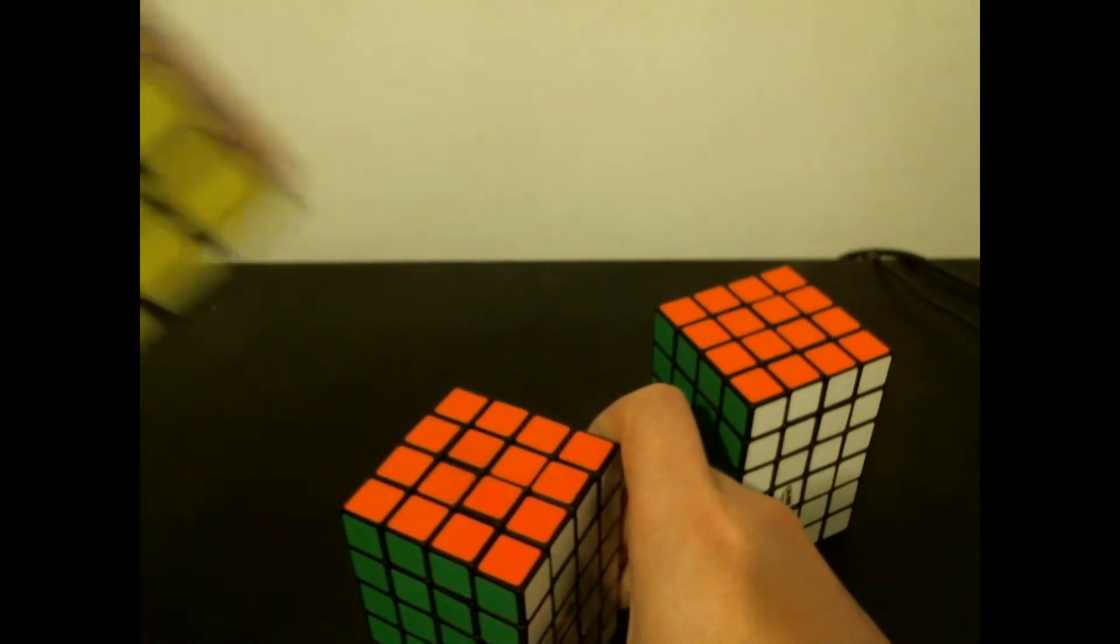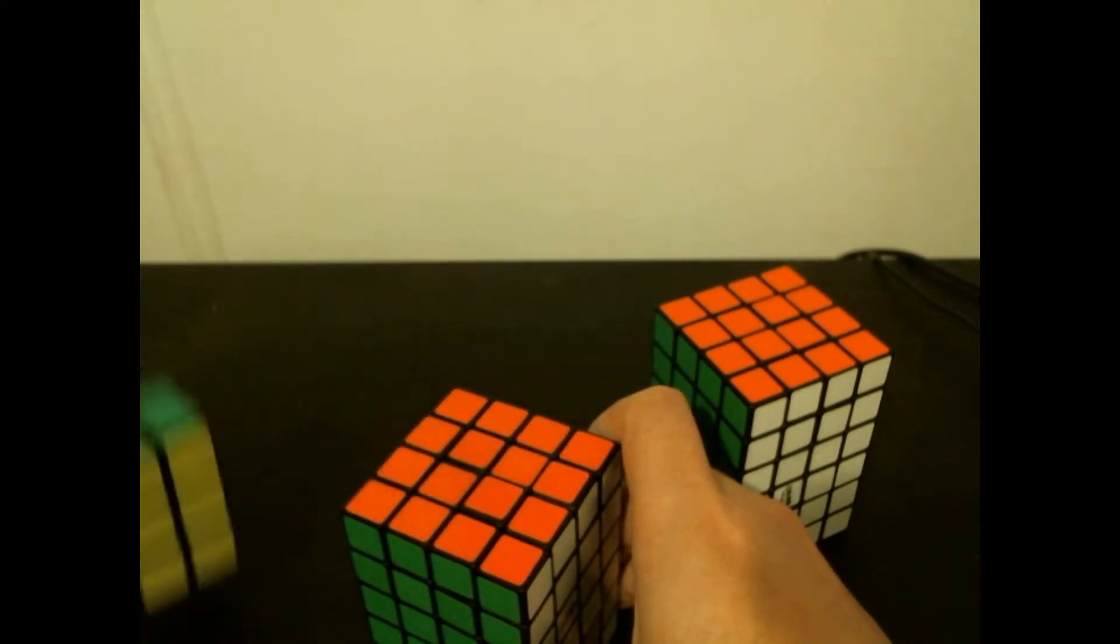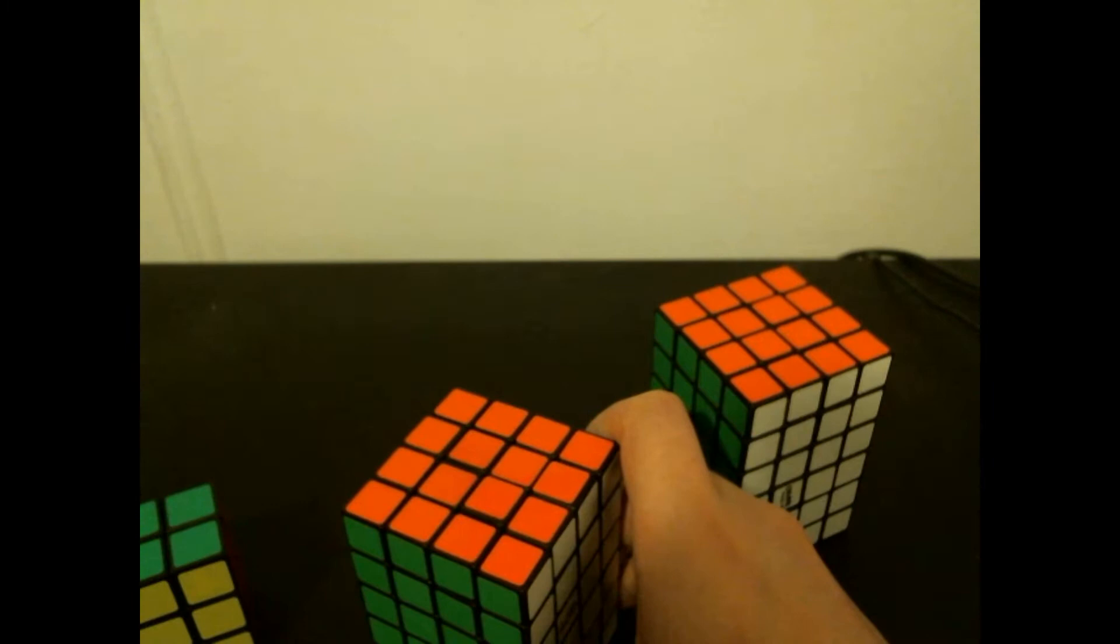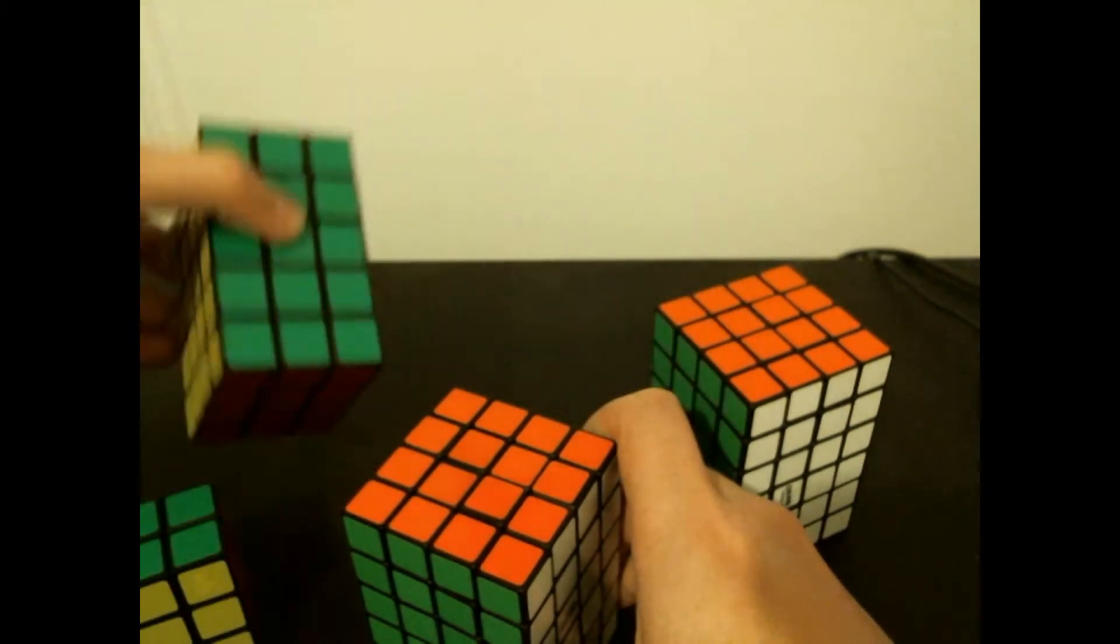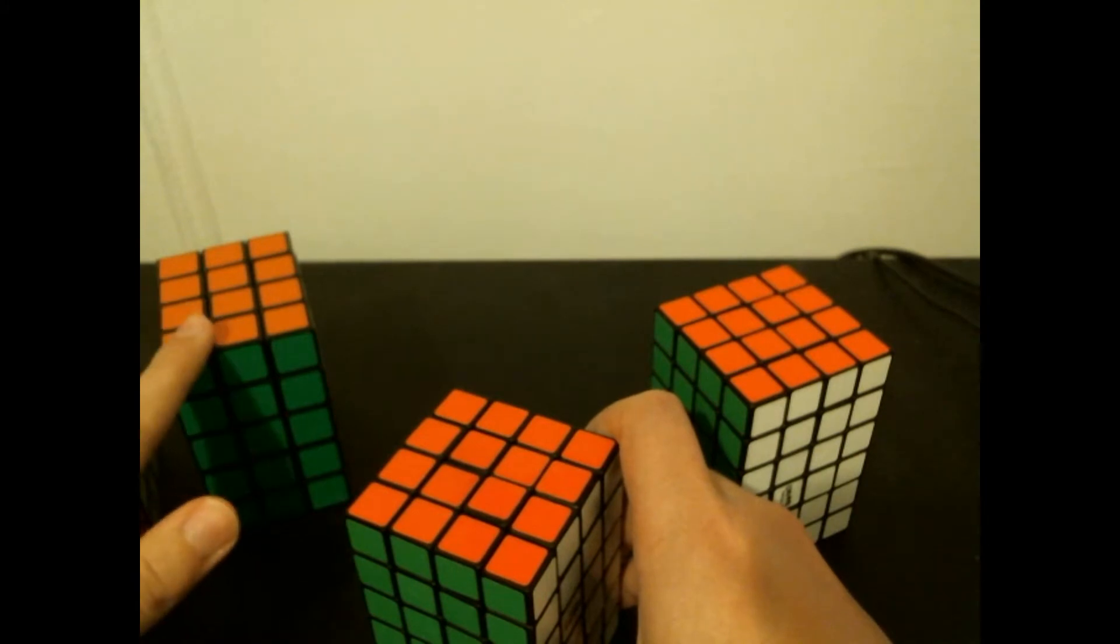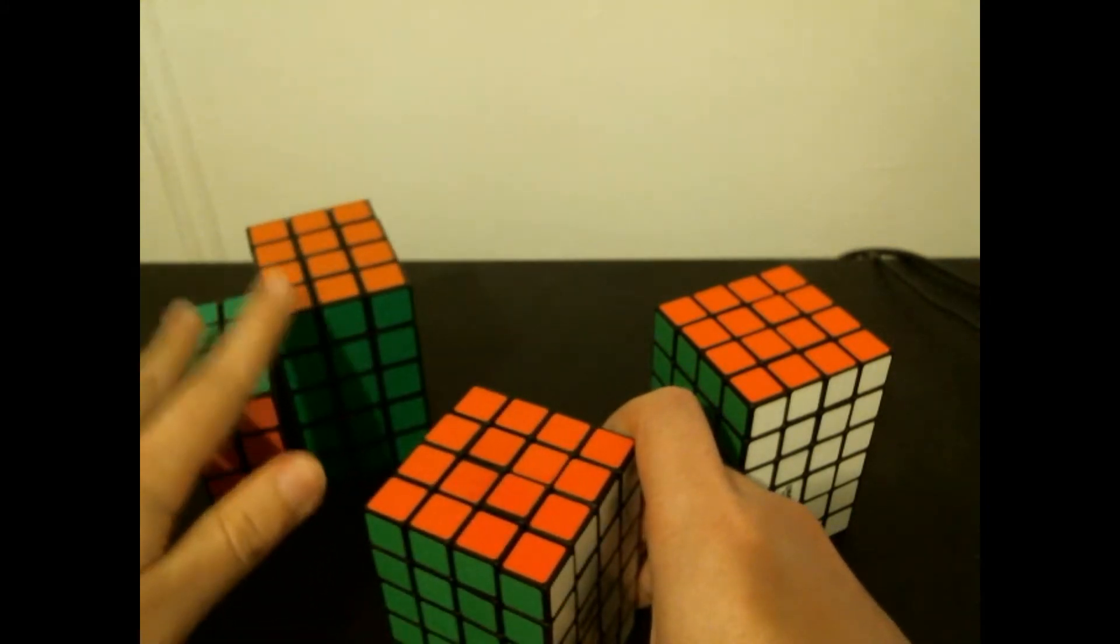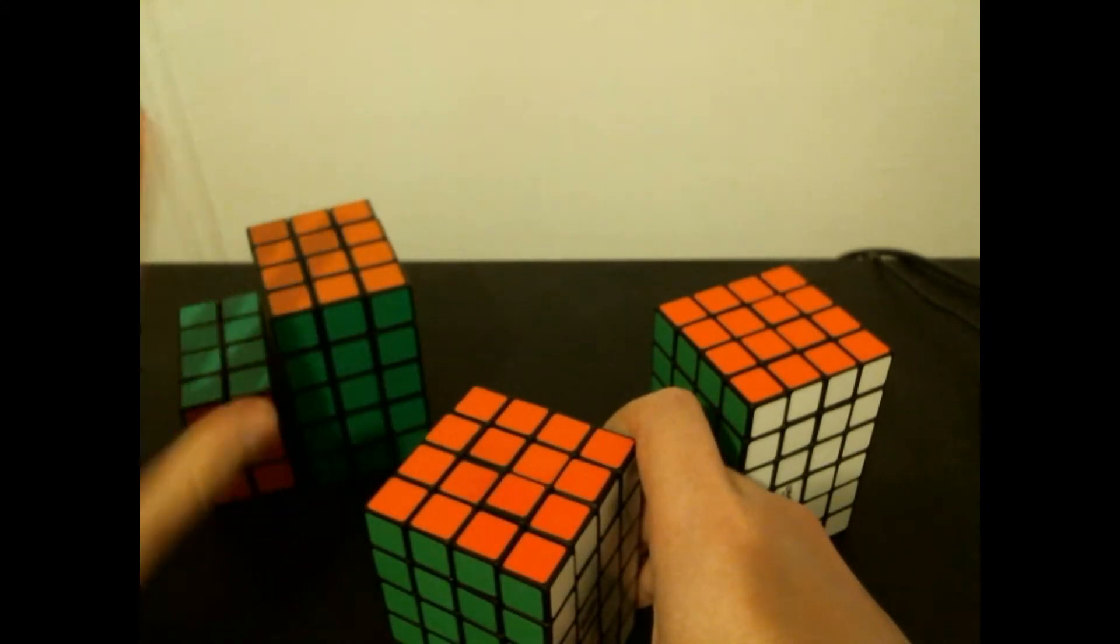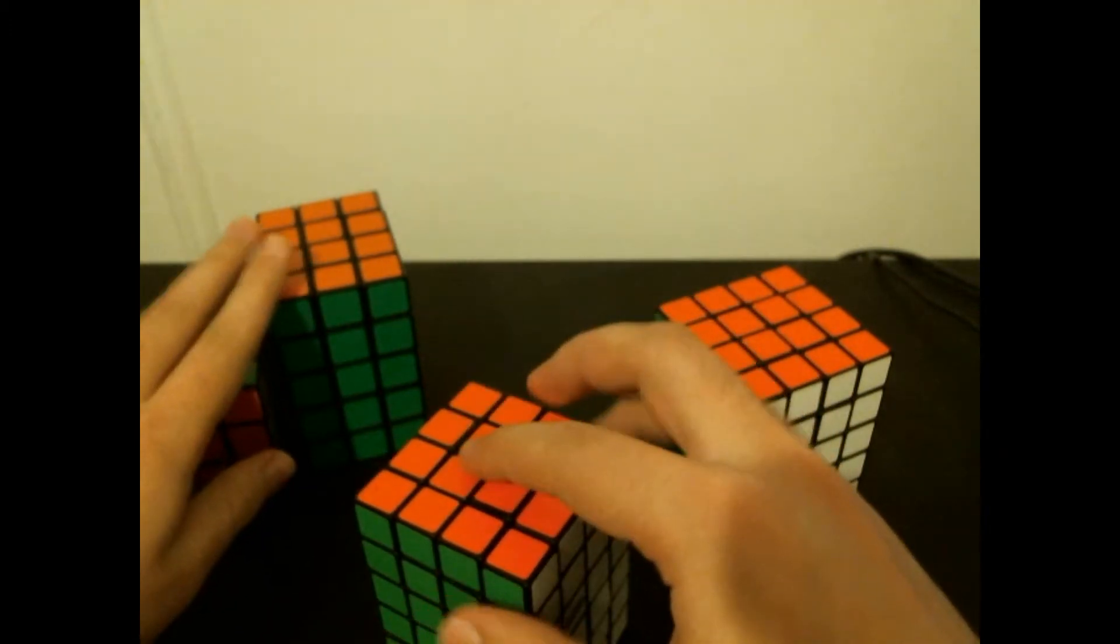Specifically cuboids by Tom Z, like this 2x3x4 and also this one right here which is a 3x4x5. These two turn amazing, they turn so great. So I was expecting that since this is also by Tom Z that it's going to turn well.